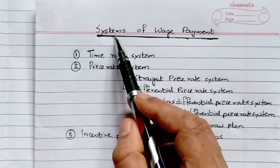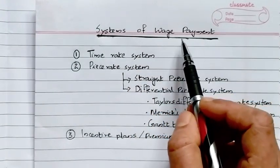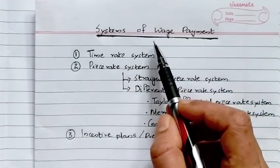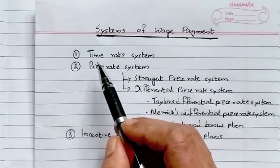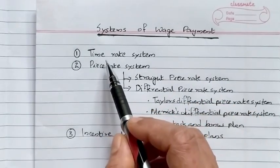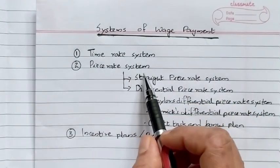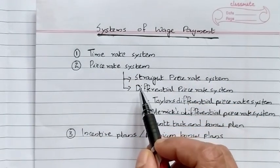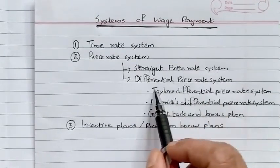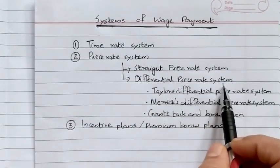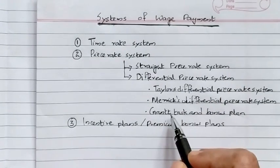Good morning students. Today's topic is Systems of Wage Payment. The first system is the Time Rate System and the second is the Piece Rate System. Piece Rate System is again classified into two: Straight Piece Rate System and the Differential Piece Rate System. Differential Piece Rate System is the third plan.